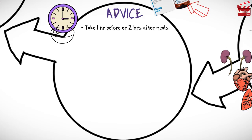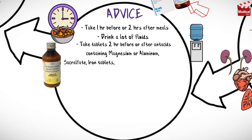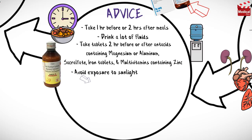Take this drug 1 hour before or 2 hours after meals with a glass of water, and drink sufficient fluids to ensure adequate urinary output. Take tablets 2 hours before or after antacids containing magnesium or aluminum, as well as sucralfate, iron tablets, and multivitamins containing zinc. Avoid exposure to sunlight and use sunscreen or protective clothing until tolerance is determined.